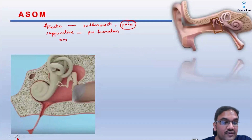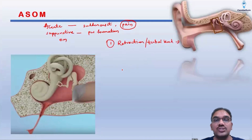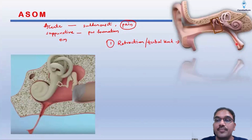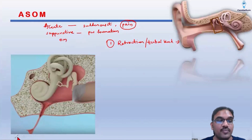The first stage is the stage of retraction, also called the stage of tubal block. Due to edema of the mucosal lining inside the Eustachian tube — caused by inflammation locally spread from the upper respiratory tract — once this inflammation spreads into the Eustachian tube, the mucosa inside will get edema. Once the mucosa inside the closed lumen tube-like structure gets edema, it will block the lumen of the tube. So in the tubal block stage, there will be block of the Eustachian tube.